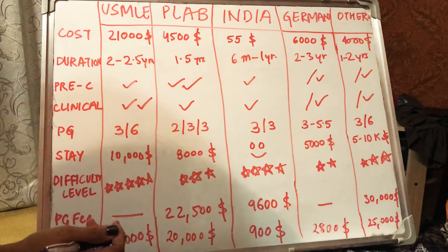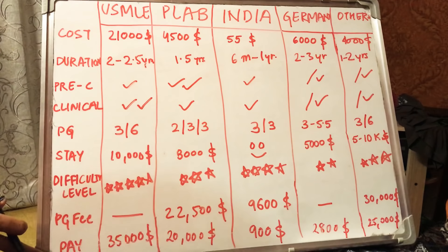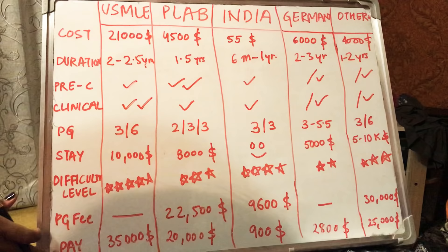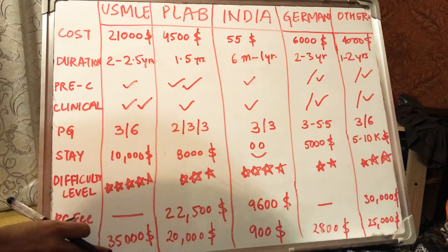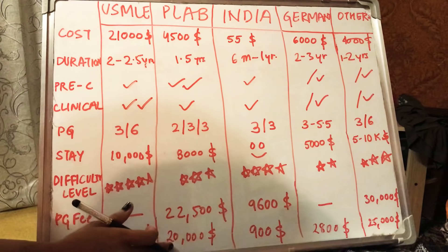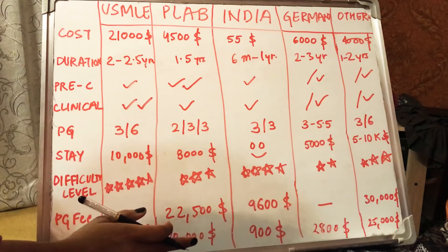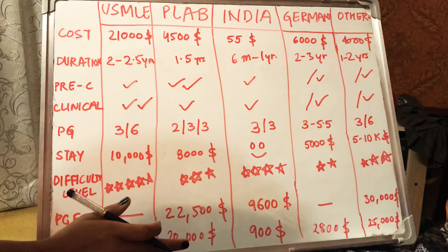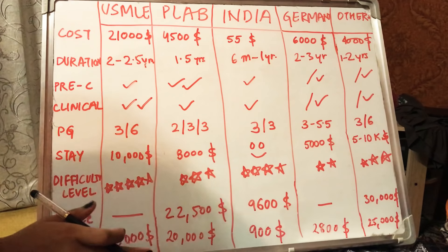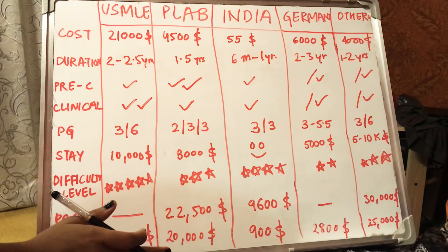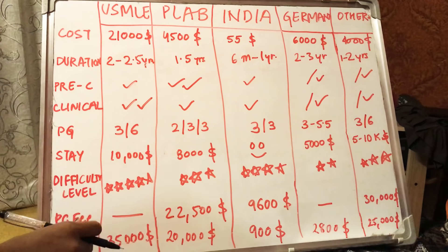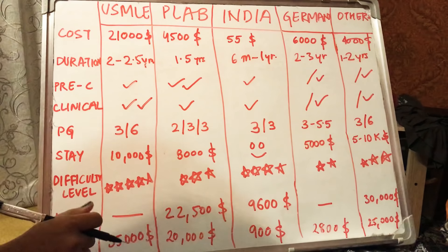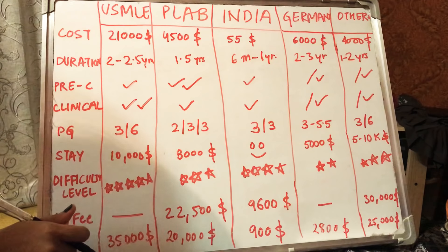For pay scale — the minimum stipend during residency or internship — USMLE offers $35,000, PLAB offers $20,000, India offers $900, Germany offers $2,800, and other countries such as Canada and Australia offer $25,000. So PLAB and others are roughly equivalent, while USMLE has the highest pay scale.